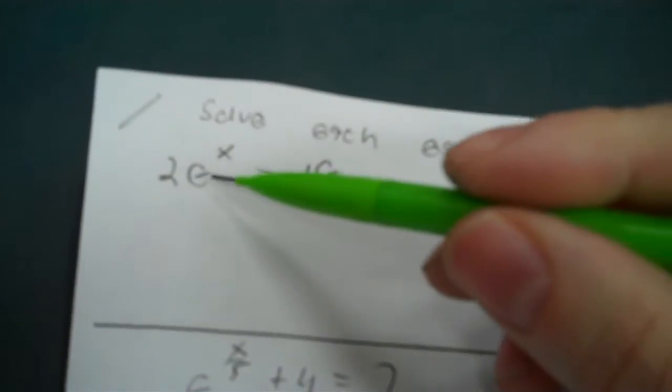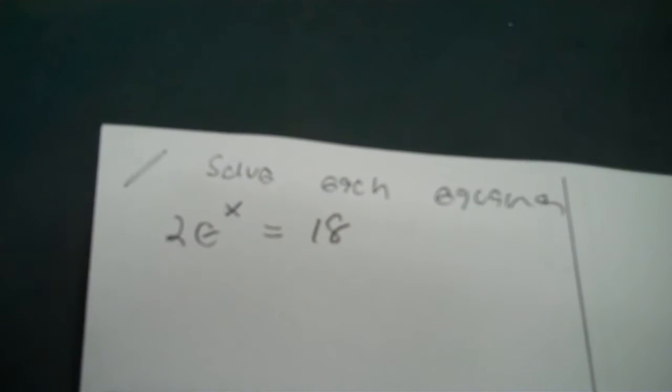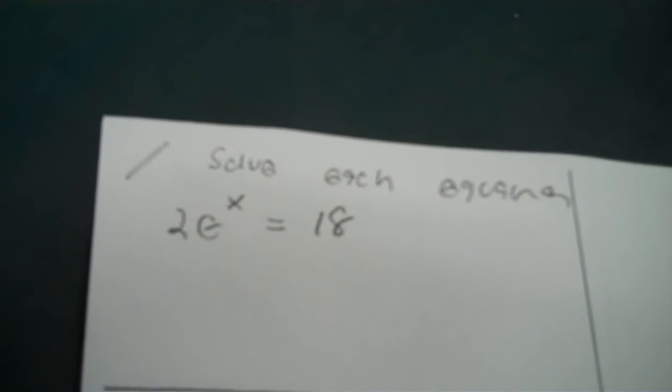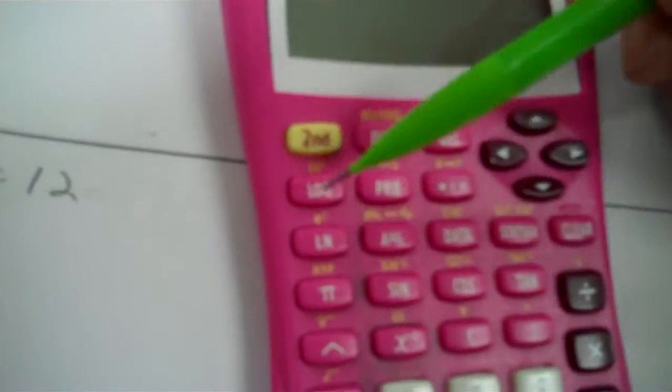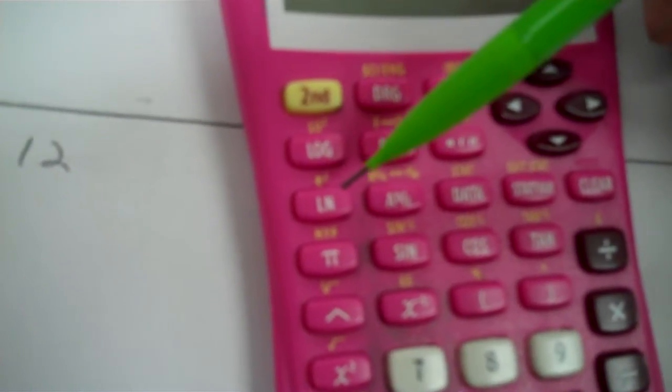Okay, we're kind of to the end of the road here in this unit. What you have here is some equations where you have this E right here. And there is a way you get rid of the E, but you have to rewrite this button on your calculator is kind of the key. It's the third key down, LN. Okay, so you're solving each equation for X.